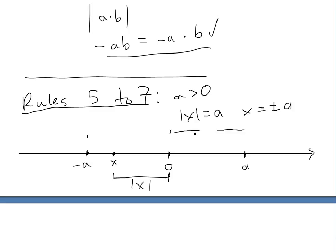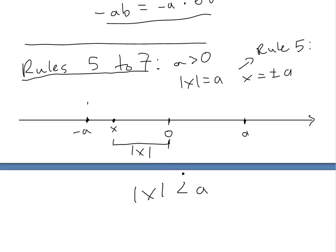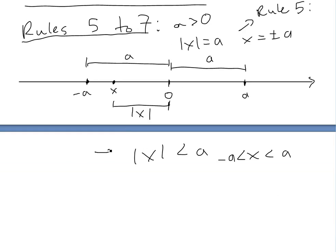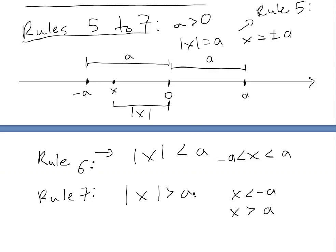For rule six, absolute value of X is less than A only when X lies between negative A and A, because the absolute value at both endpoints equals A, and within the interval the distance to zero is smaller. So X must satisfy negative A less than X less than A. Rule seven is the opposite: absolute value of X is greater than A when X is less than negative A or greater than A — that is, when X lies anywhere outside the interval. You can clearly see on the number line that those positions give a larger absolute value.